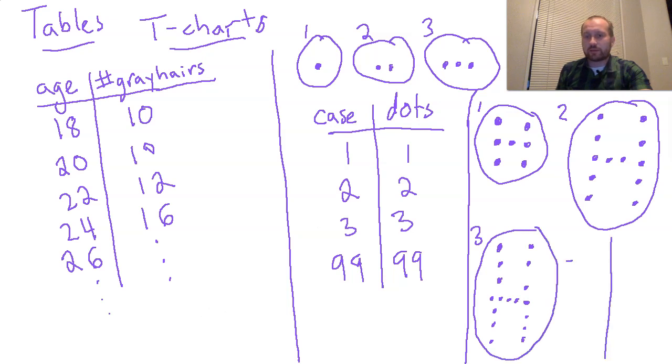So again, I might say case number over here, the number of dots over here. And case one, I can count up the dots. I have seven.